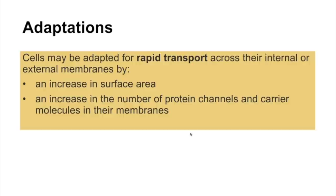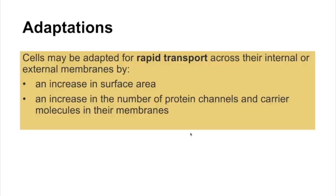Cells may be adapted for rapid transport across their internal or external membranes. Adaptations include increased surface area — for example, microvilli — or an increased number of protein channels and carrier molecules within the membrane to increase the rate of transport.